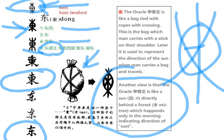Other expressions include 东张西望, meaning to look around; 东边看看,西边看看; and 做东, meaning to be the host, etc. This has been the Chinese evolution of character 东. Thank you.